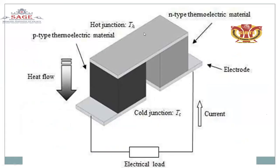The hot junction is represented by Th and the cold junction by Tc. The hot junction is where current passes through the material junctions, and the cold junction is where heat is released or rejected. The electrode is connected at the bottom sides; heat flow is always from the hot to cold side. The electrical load produces voltage through the EMF.